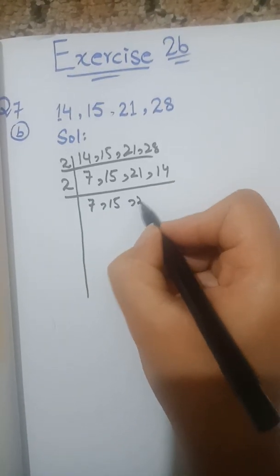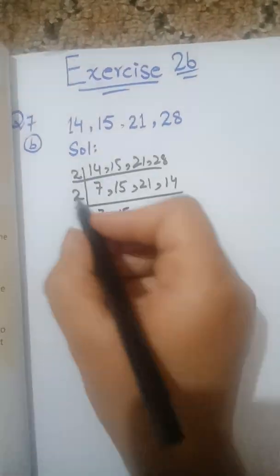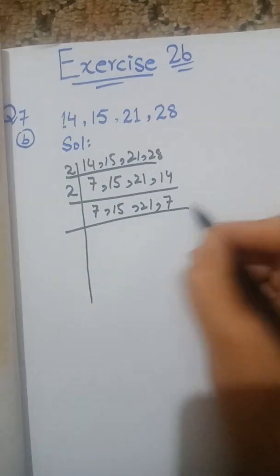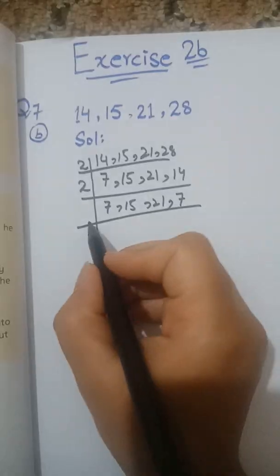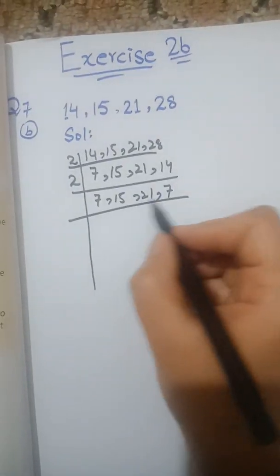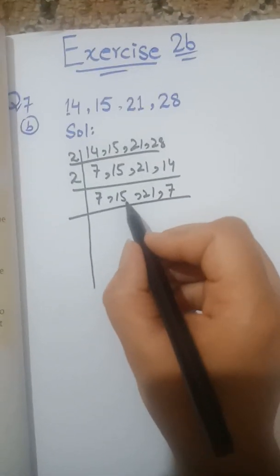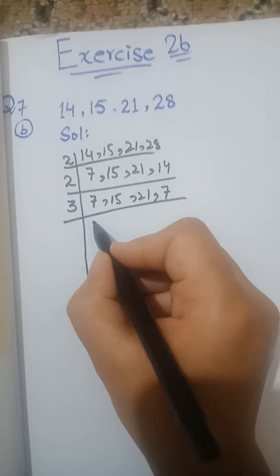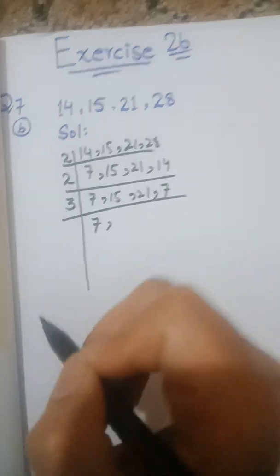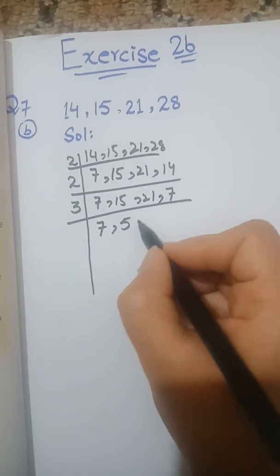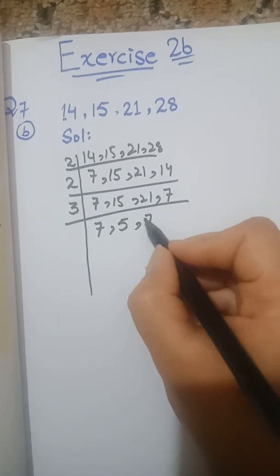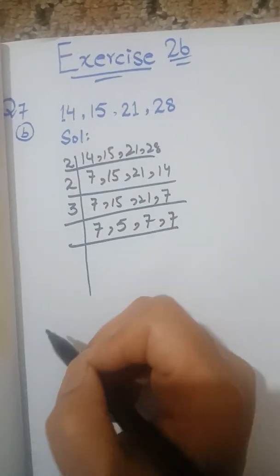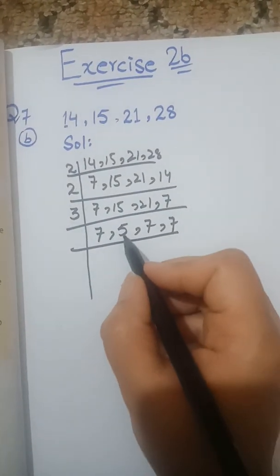Mazeed 2 ka table lagta hai — 14 pe lagega: 2 × 7 = 14. 15 aur 21 as it is utaarenge, aur 2 × 7 = 14 ho jaayega. Ab next prime number 3 lenge — 15 pe bhi lagega aur 21 pe bhi lagega. Jo nahi lag raha usse as it is utaar denge. 3 × 5 = 15, 3 × 7 = 21, aur woh 7 as it is aa jaayega.